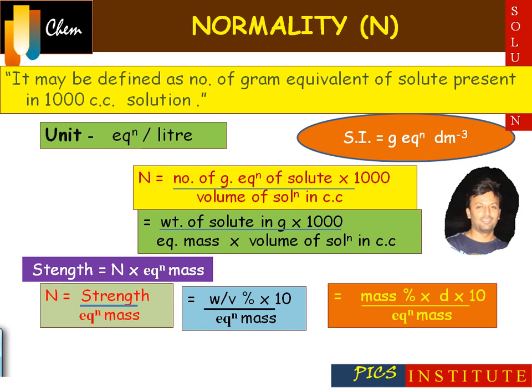The difference between normality and molarity is: in normality we use equivalent mass, whereas in molarity we use molecular mass. The relation between normality and molarity is: normality equals acidity or basicity multiplied by molarity.